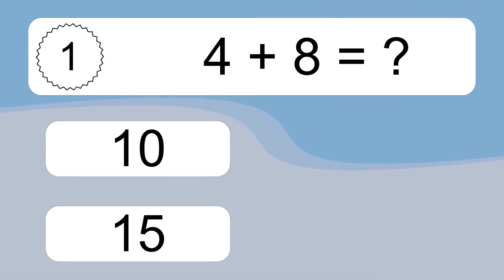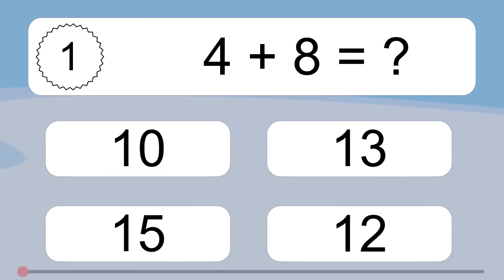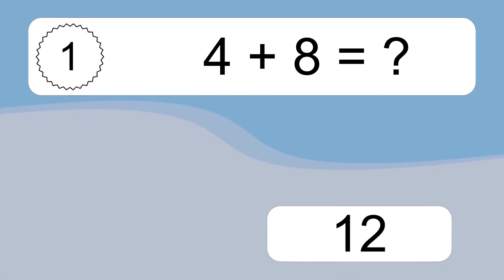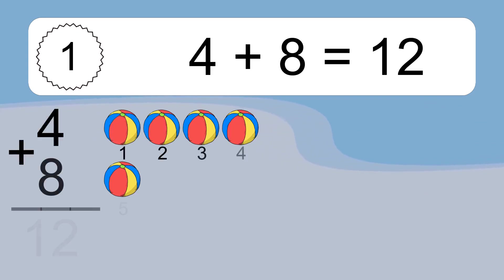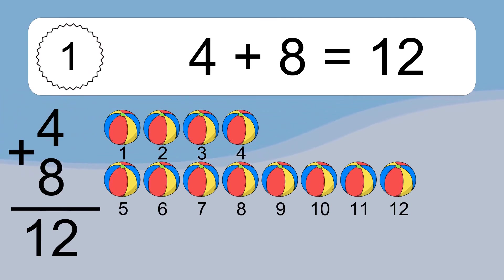4 plus 8 equals what? 4 plus 8 equals 12. Let's count it. 1, 2, 3, 4, 5, 6, 7, 8, 9, 10, 11, 12.